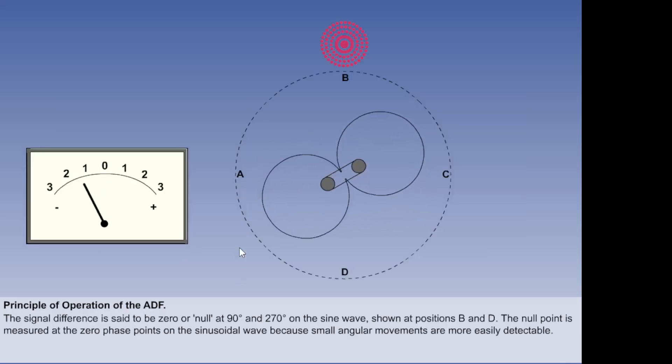Suppose the transmitter is at position B. If the loop antenna is rotated slightly in either direction, signal strength will increase. By finding the null position, zero signal strength, the bearing of the transmitter from the loop can be determined.